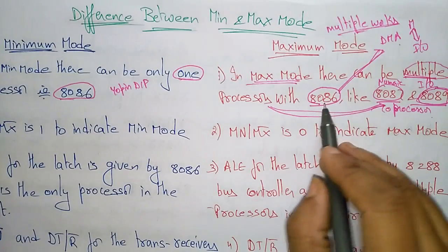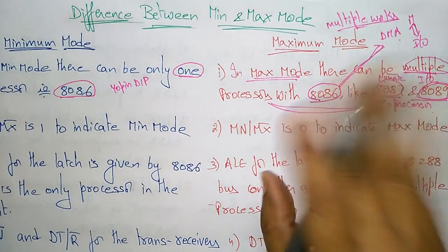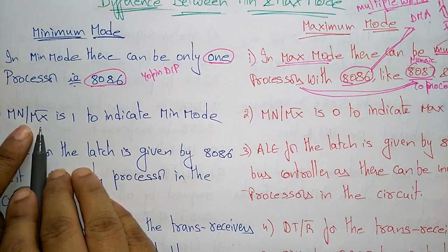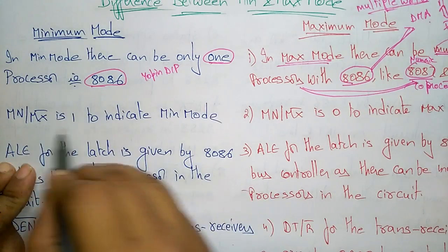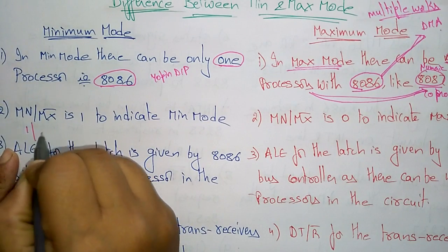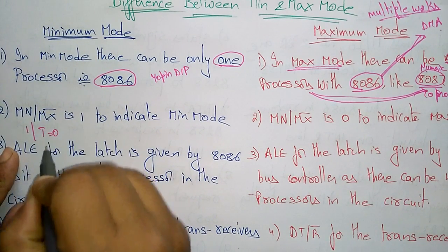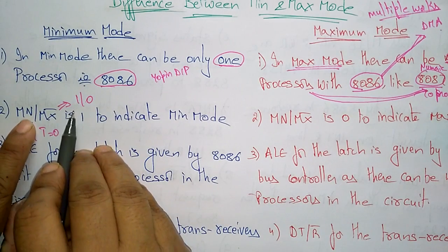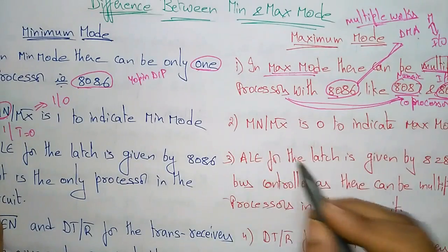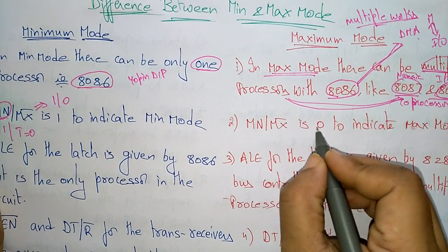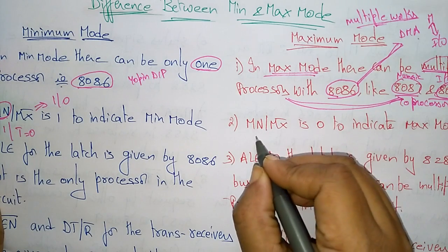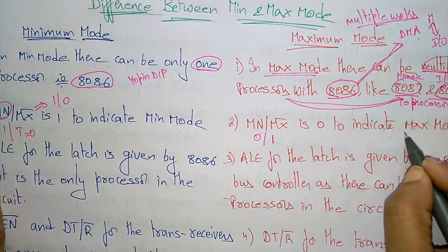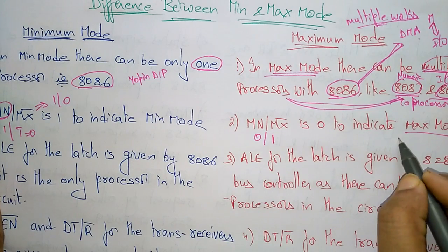Those coprocessors are connected to the 8086 main processor. The MN/MX bar pin determines the mode: when MN/MX bar is 1, it indicates minimum mode — since the bar inverts it, 1 bar gives 0, so 1 over 0 means minimum mode is active. When MN/MX bar is 0, maximum mode is active — 0 bar gives 1, so 0 over 1 means maximum mode is active.